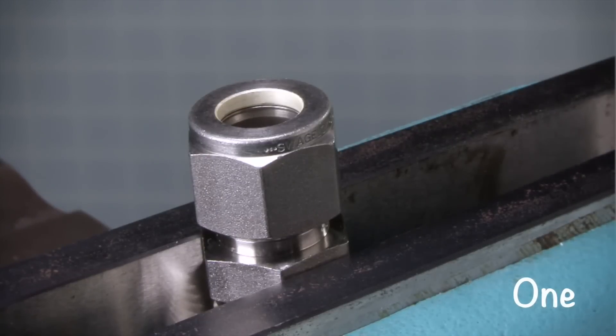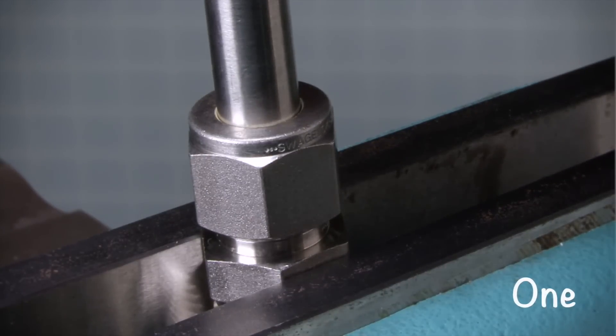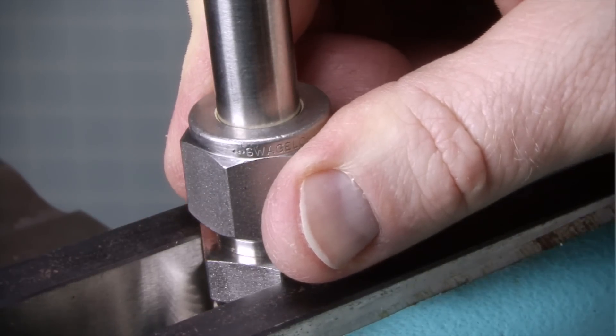Step 1. Fully insert the tube into the fitting, and against the shoulder. Rotate the nut to make sure it is finger tight.